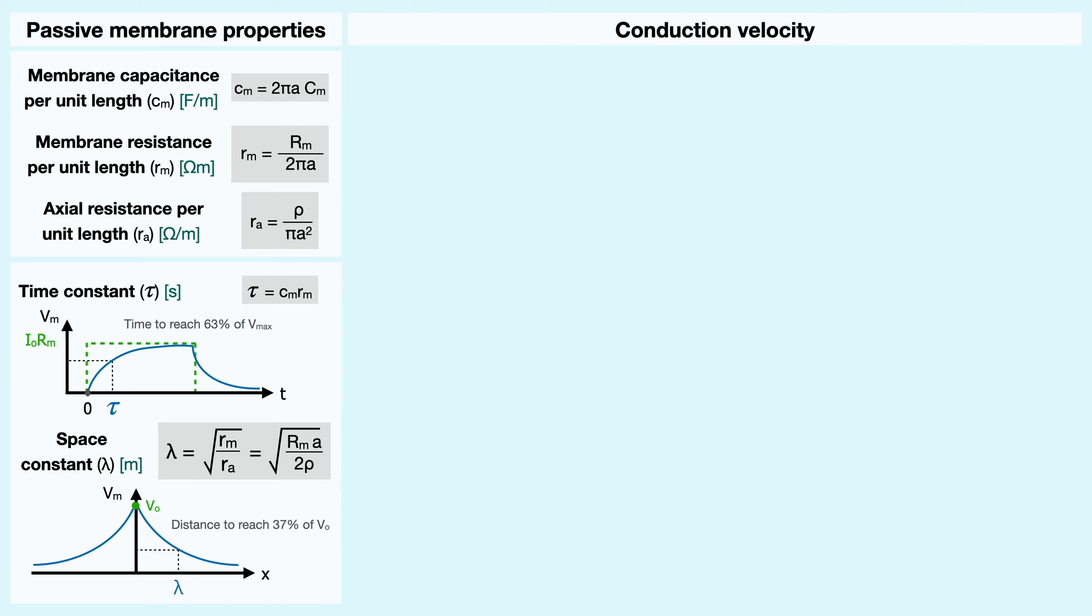The two main mechanisms that increase the conduction velocity are linked with the diameter of the axon and the level of myelination of the axon.